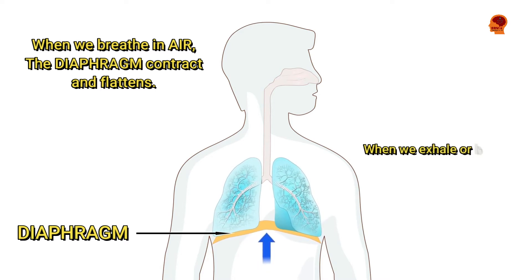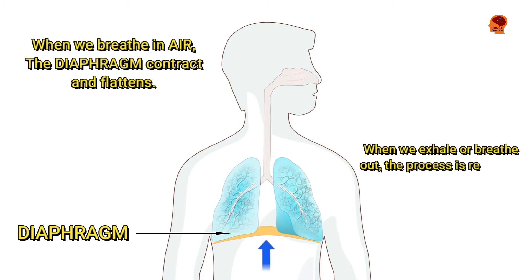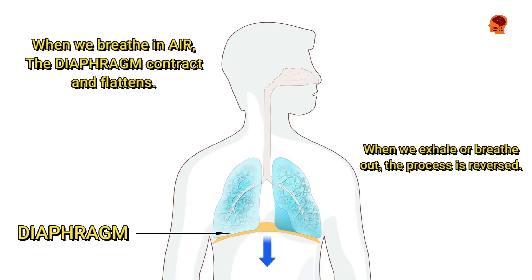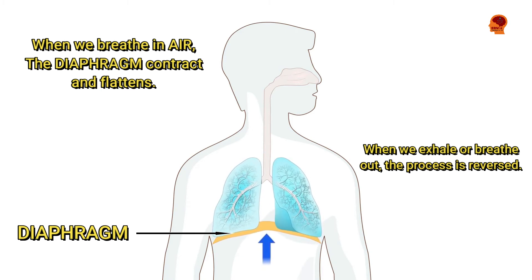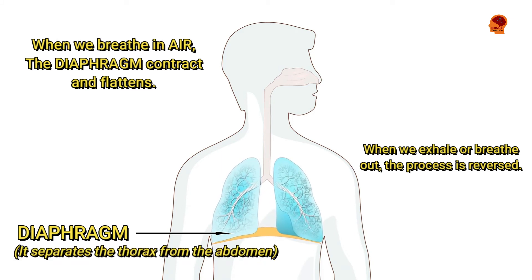When we exhale or breathe out, the process is reversed. The diaphragm relaxes, which reduces the volume and increases the pressure in the thoracic cavity, so the air is forced out of the lungs.